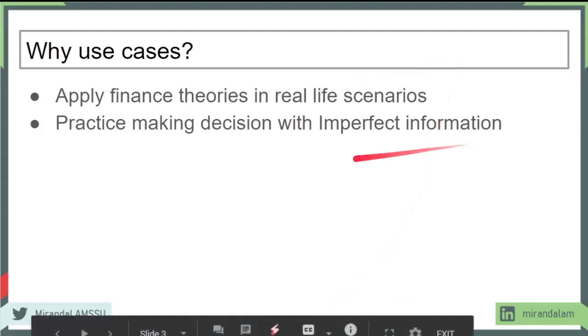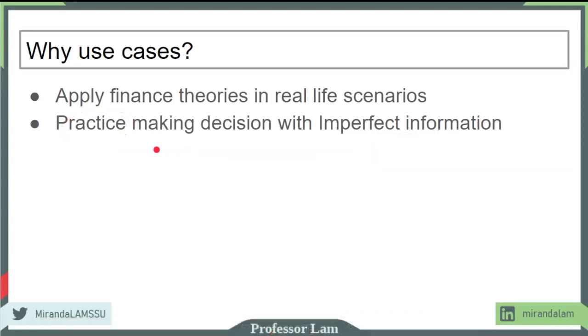So dealing with imperfect information is something that takes practice. Another thing that goes hand in hand with imperfect information is dealing with situations that are ambiguous. There is no right answer. Unlike a textbook question where students do the calculations and ask, did I get the right answer? In real life, we don't have the right answer.